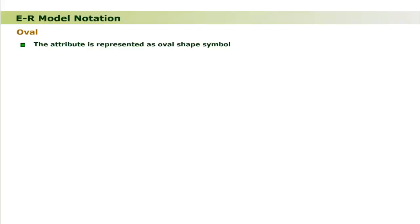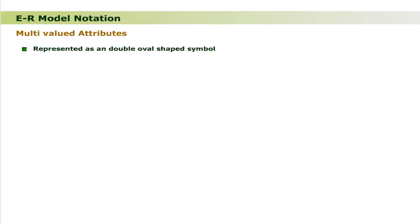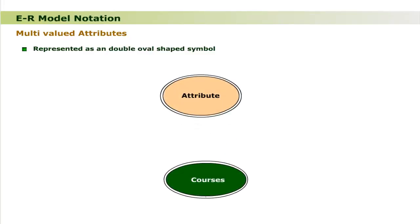The attributes are represented as an oval-shaped symbol. The multi-valued attribute is represented by a double oval-shaped symbol. The name of the attribute is written inside. For example, the multi-valued attribute 'courses' is represented as shown.